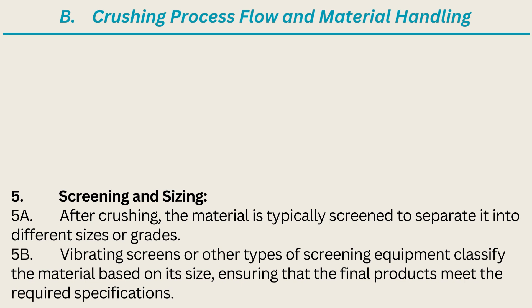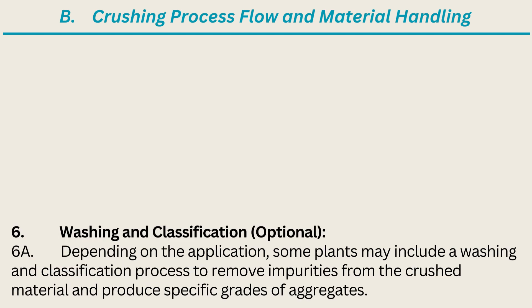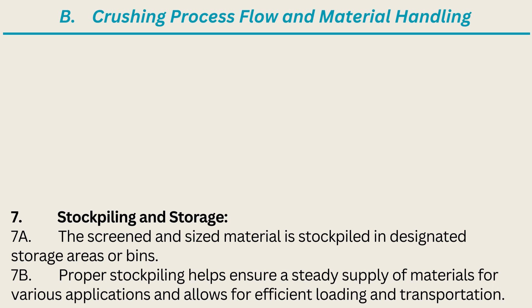5. Screening and Sizing. After crushing, the material is typically screened to separate it into different sizes or grades. Vibrating screens or other types of screening equipment classify the material based on its size, ensuring that the final products meet the required specifications. 6. Washing and Classification (optional). Depending on the application, some plants may include a washing and classification process to remove impurities from the crushed material and produce specific grades of aggregates. 7. Stockpiling and Storage. The screened and sized material is stockpiled in designated storage areas or bins. Proper stockpiling helps ensure a steady supply of materials for various applications and allows for efficient loading and transportation.